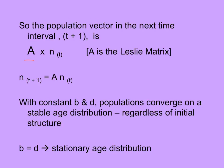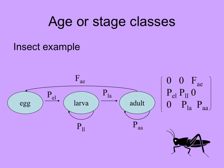With constant birth rate and death rate, populations will converge on a stable age distribution, regardless of their initial structure. Consider first an insect example with a very simple life cycle — like something with incomplete metamorphosis, a little cricket or grasshopper — going from egg to larva to adult. Only adults can have offspring, F, from adult to egg. Here's P from egg to larva, and the transition probability from larva to adult. Here are the probabilities of staying the same: an adult remaining an adult, or a larva remaining a larva.